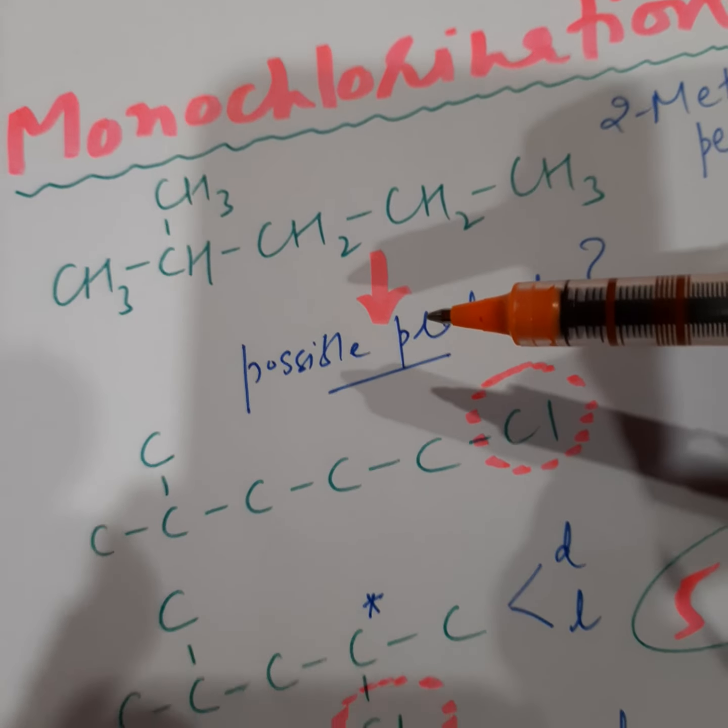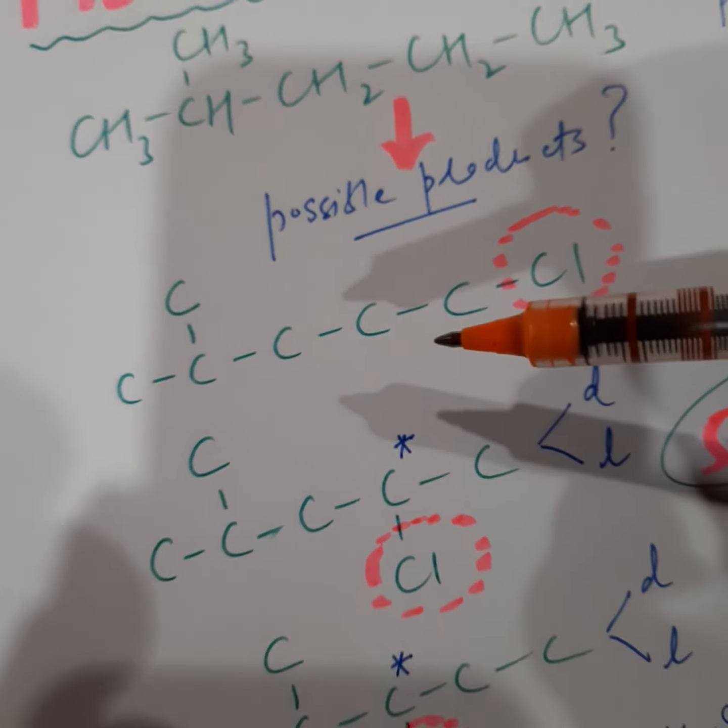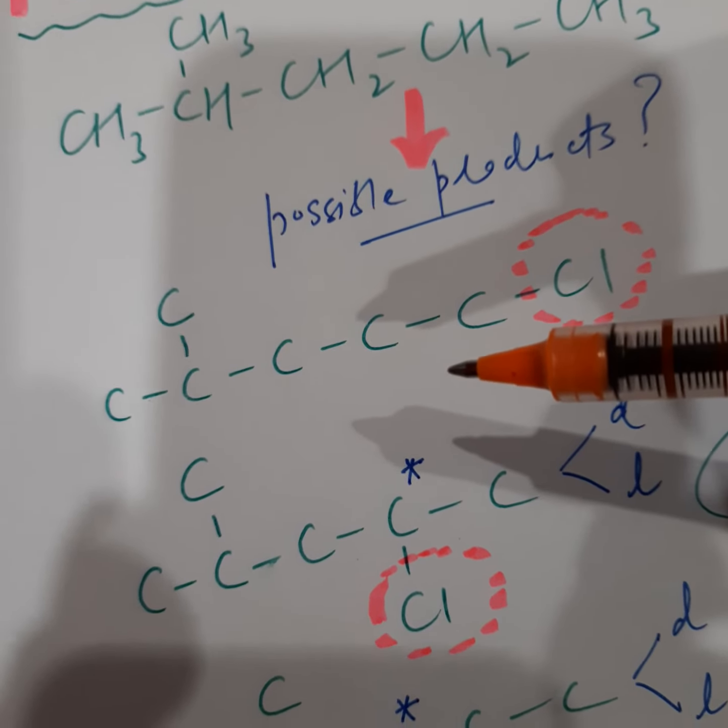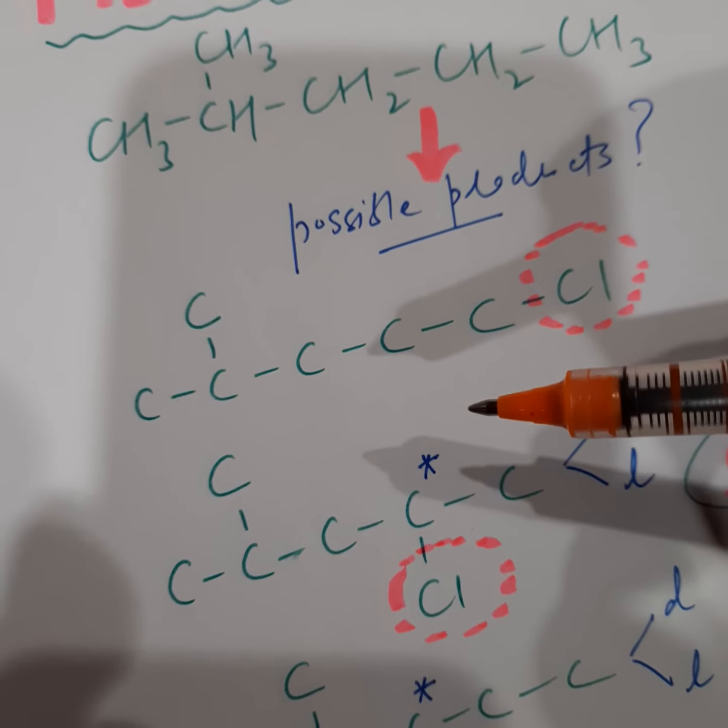Now there will be two answers. One will be counting the number of possible products without considering the stereoisomers and the other will be a detailed one with also counting the stereoisomers or optical isomers.